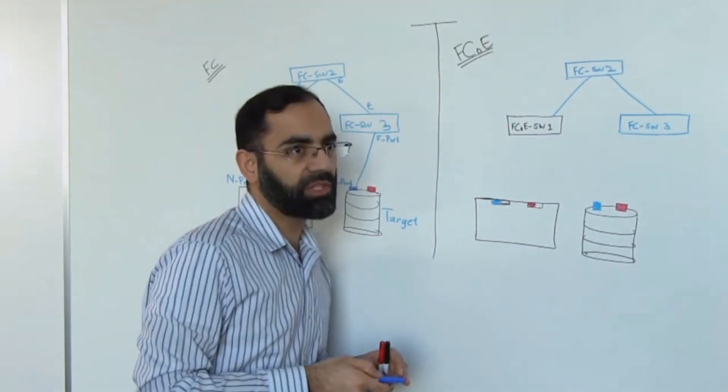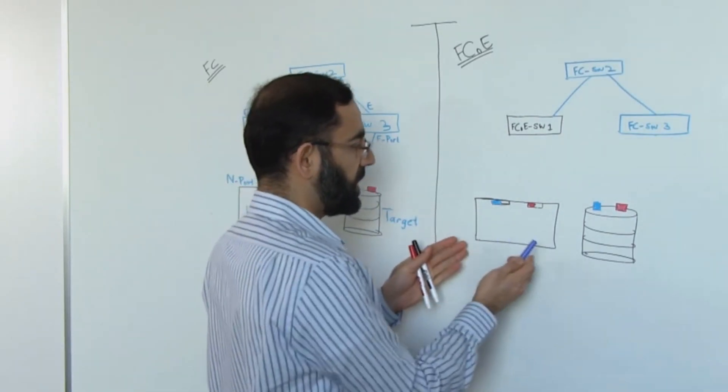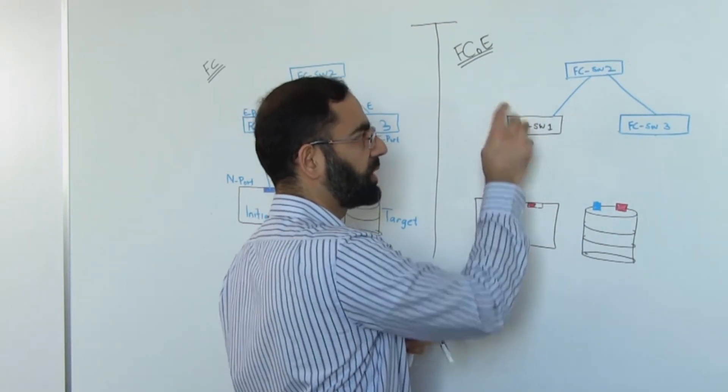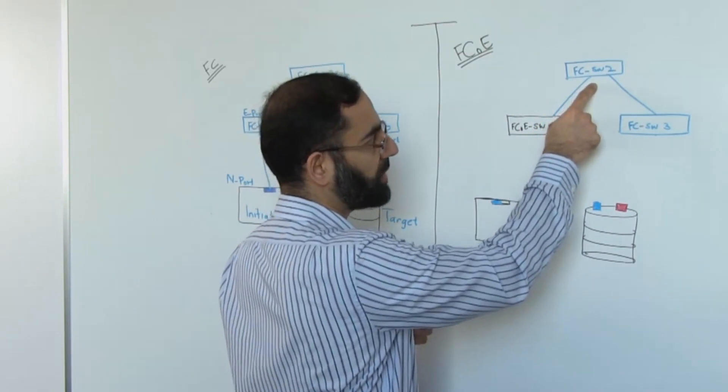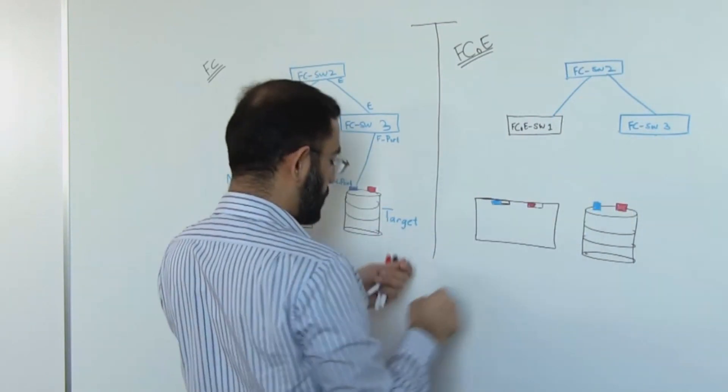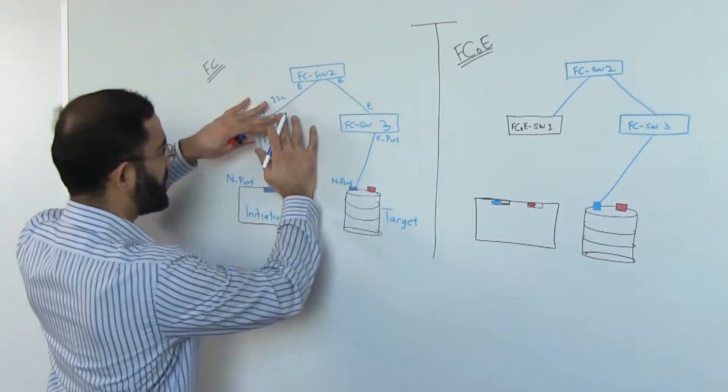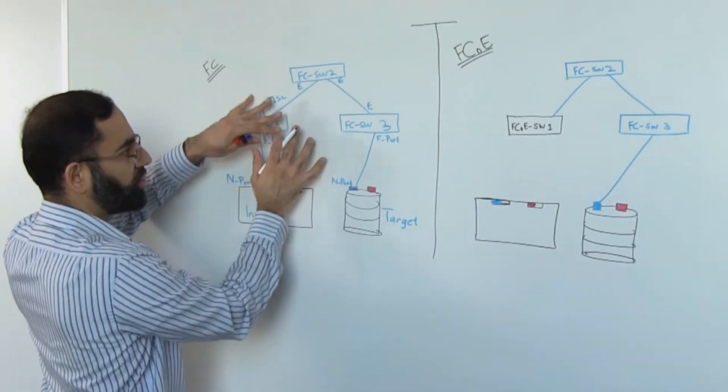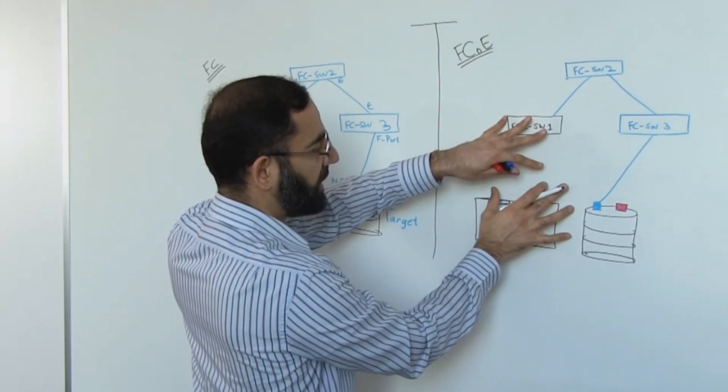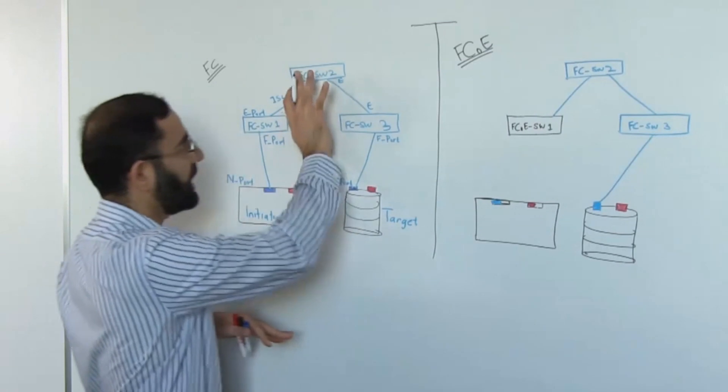Coming to an FCoE environment, we have a server with a couple of CNAs which will be connected to an FCoE enabled switch. From FCoE, we are going back to FC switch 2, exactly the same as represented here, and FC switch 3 which will be connected to this storage port. Server and the switch on the server side are being replaced by FCoE enabled server and switch, but that FCoE switch is connected to an existing FC SAN or FC fabric as shown here.